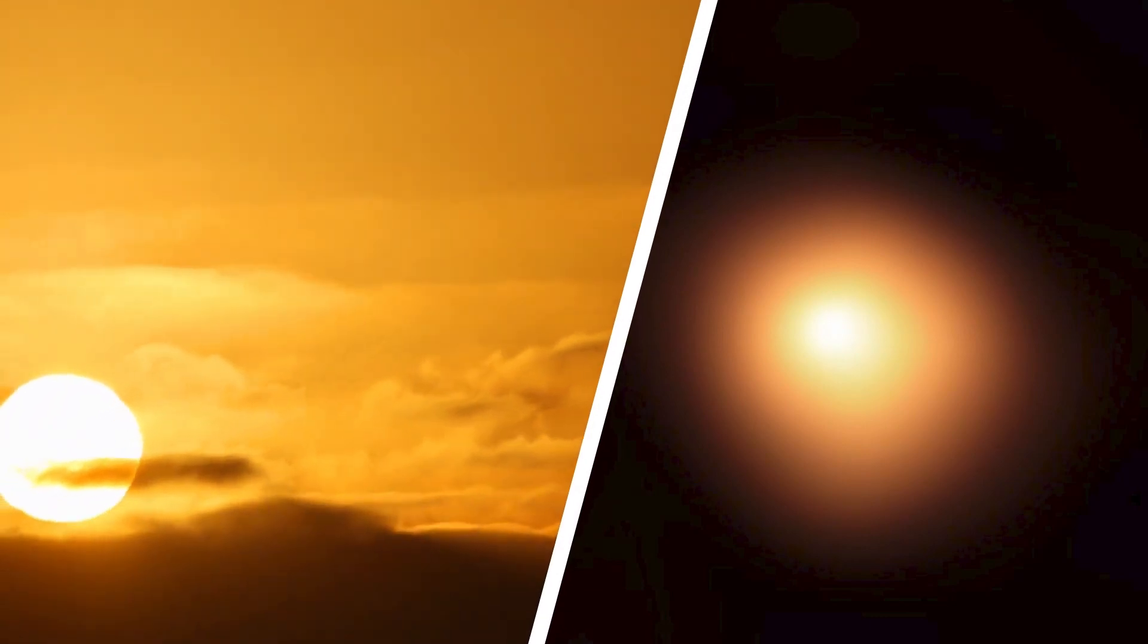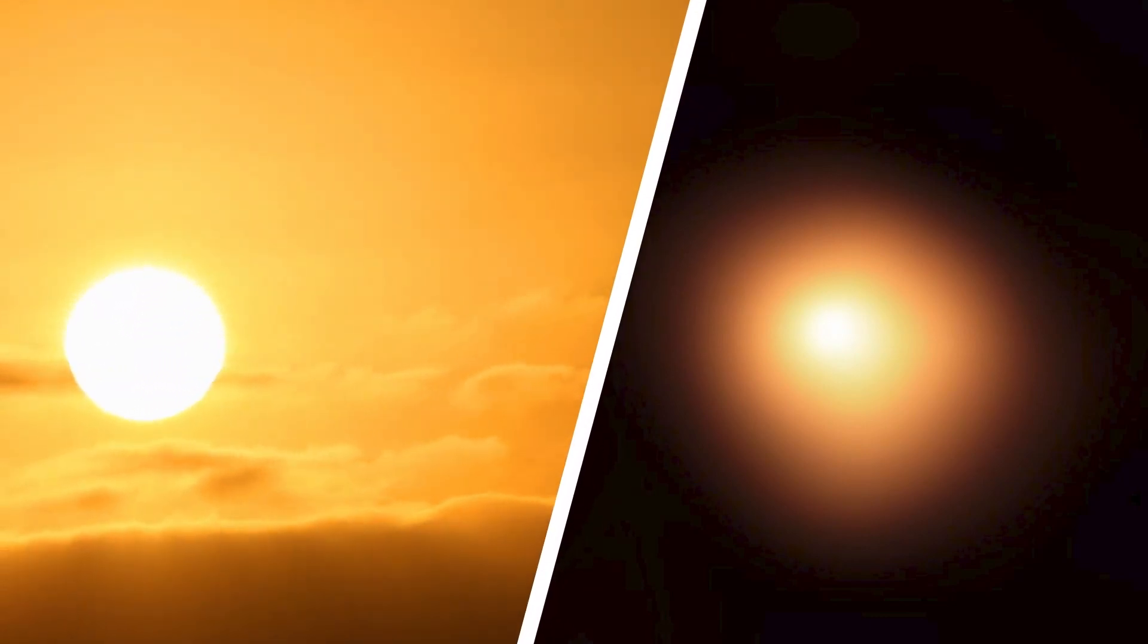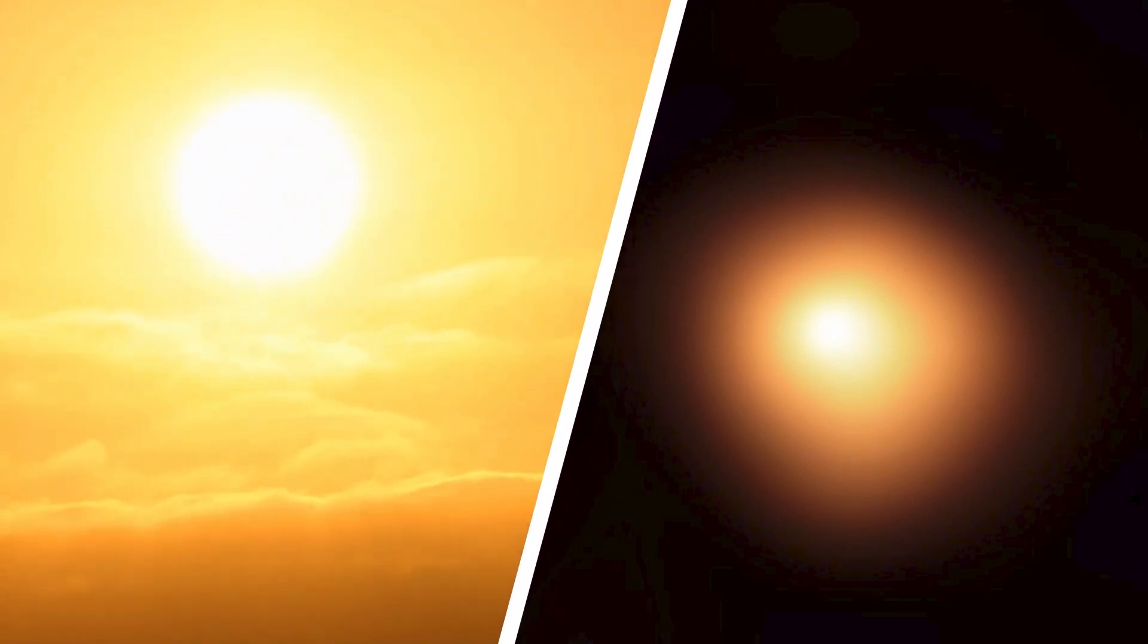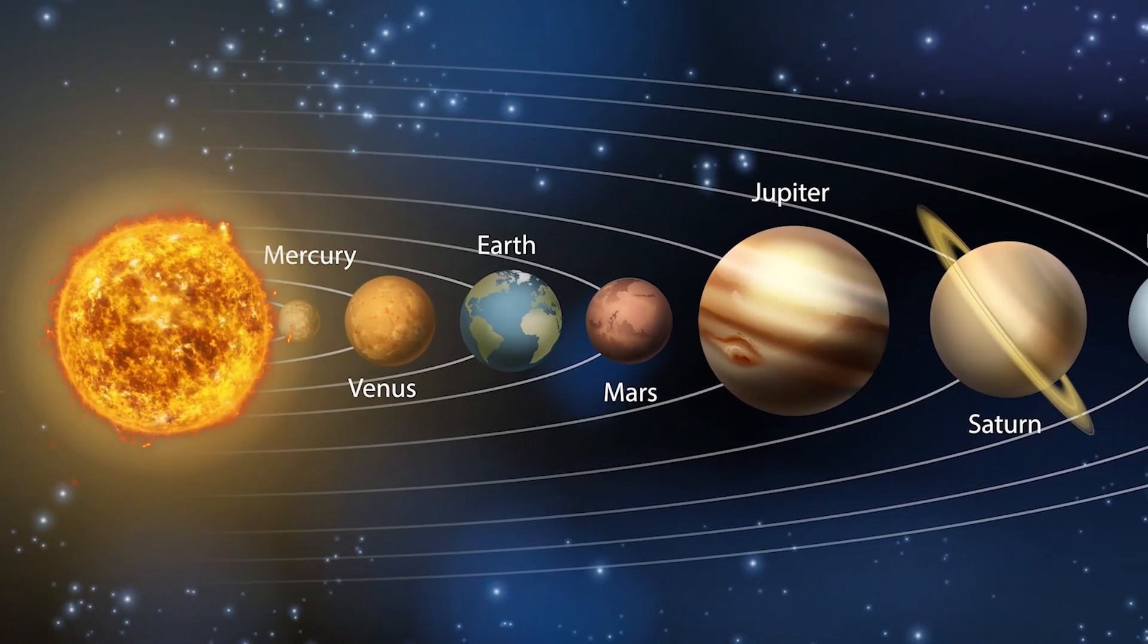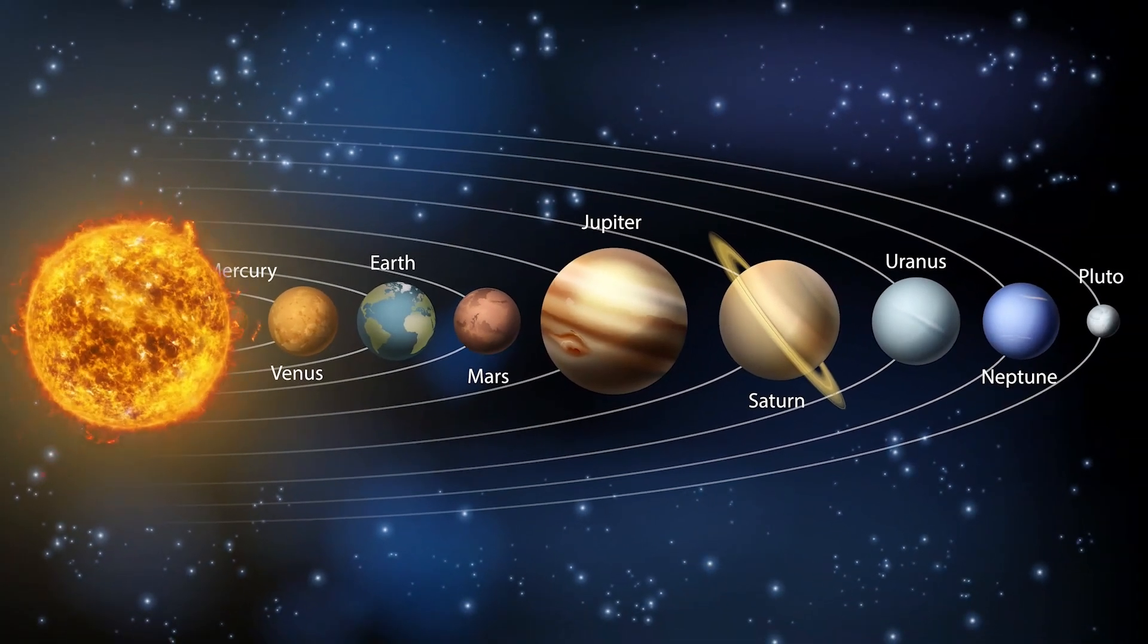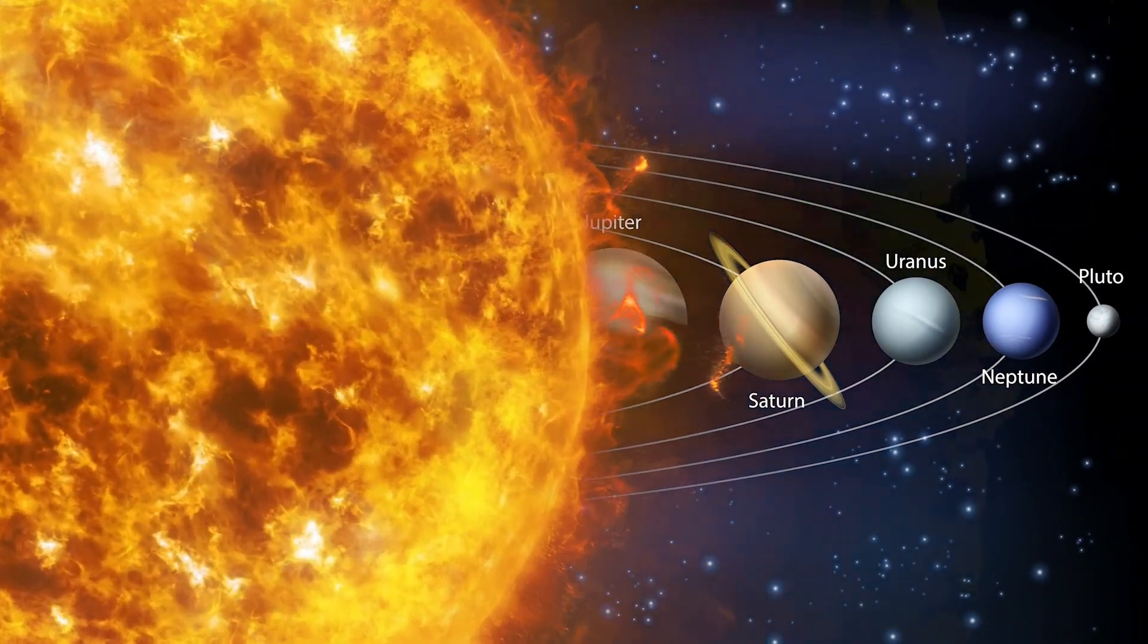Let's look at the size of Betelgeuse. If you want to compare it to our sun, it's 1000 times wider than our sun. And that means if you put it in the solar system where our sun is located, it will eat the orbit of Jupiter. That's how massive it is.